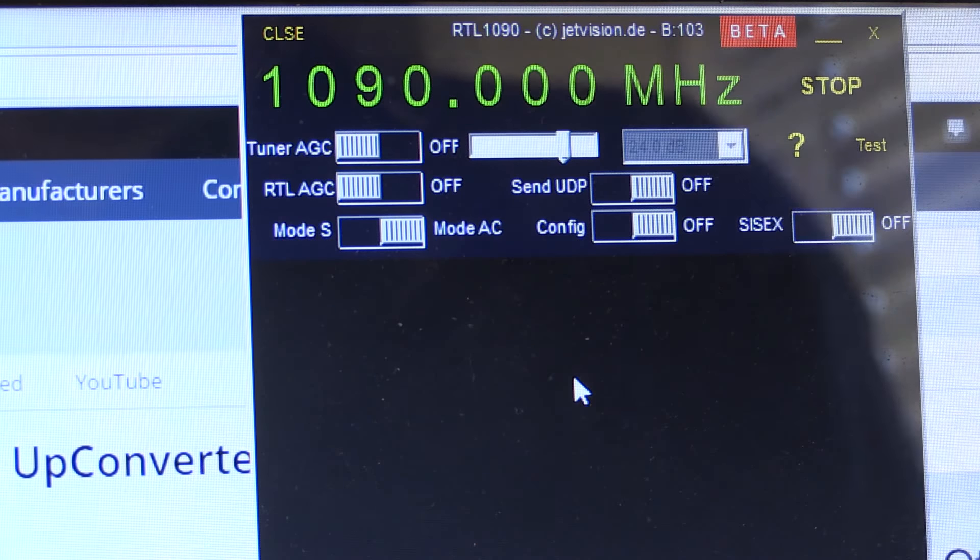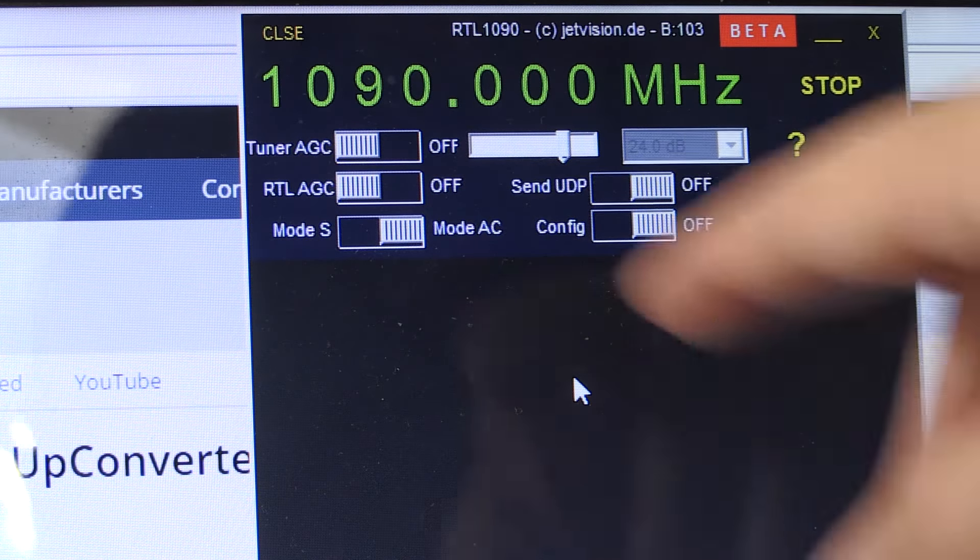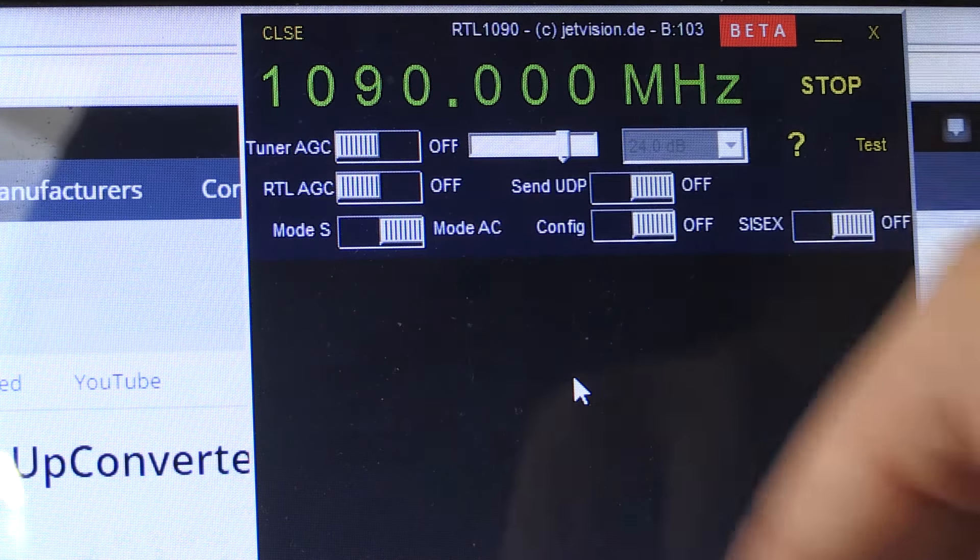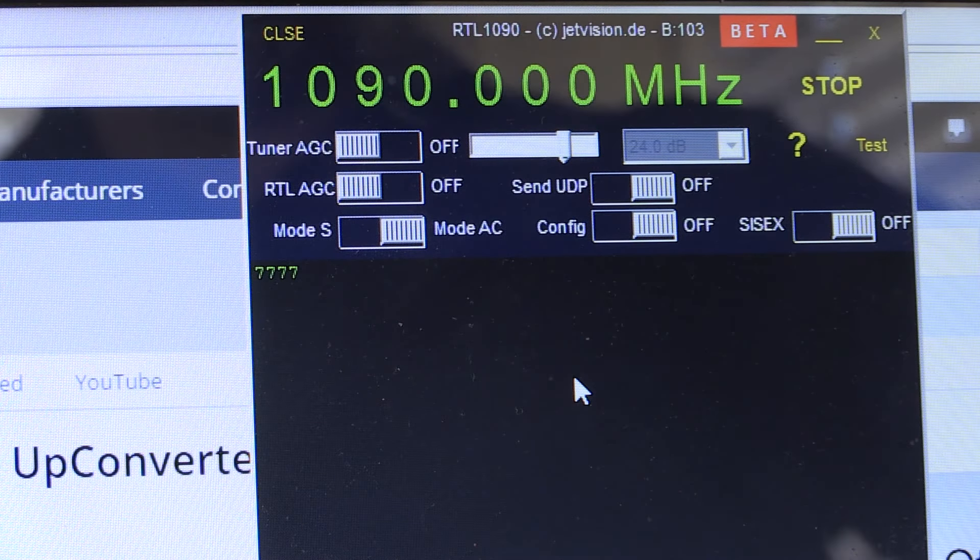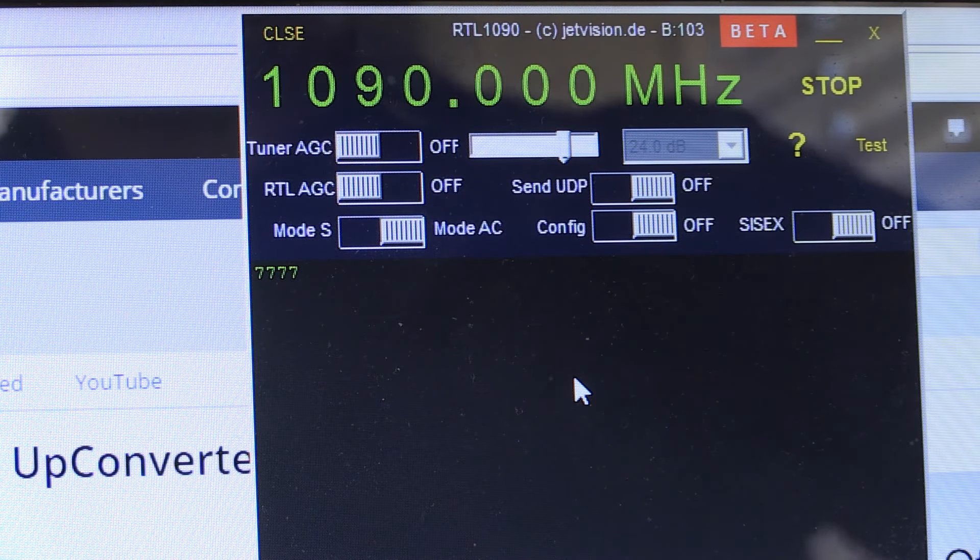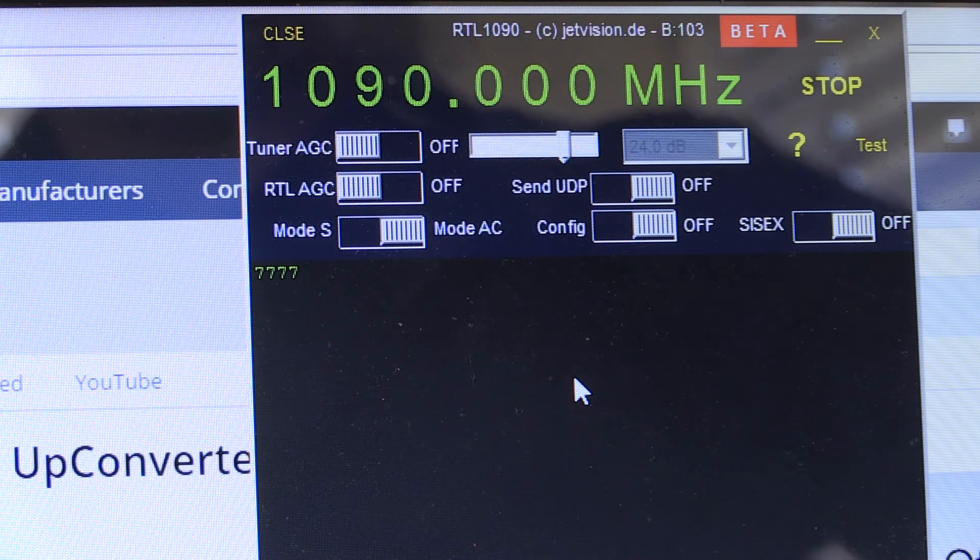All right, I got RTL 1090 open and running. It is in mode AC. So if I hit the RF enable on the TSG 4104 now, there we go. 777 is the transponder code that we were expecting.